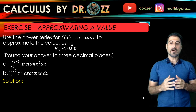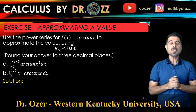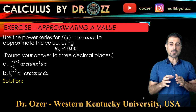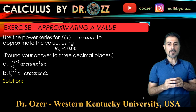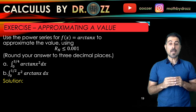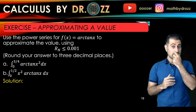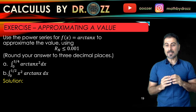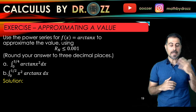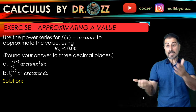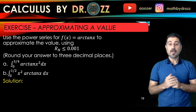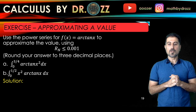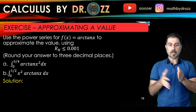So we have the function arc tan x. What we're going to do today is first write down the power series expansion of arc tan x centered around 0. Then we're going to estimate integrals involving arc tan(x²) and x² · arc tan x.